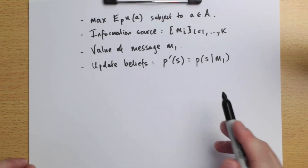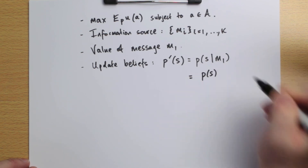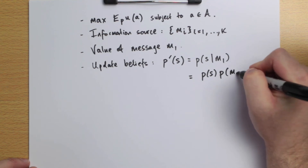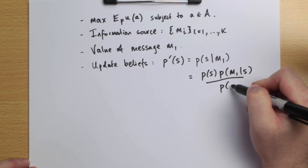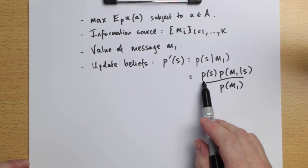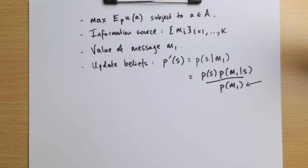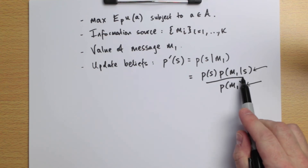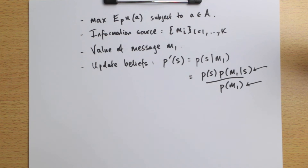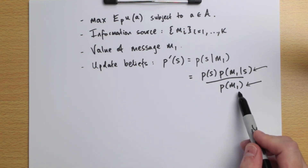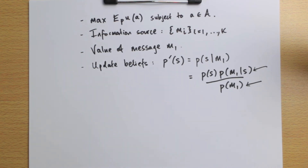We calculate this using Bayes' rule: p'(s) = P(s) × P(m1|s) / P(m1). Here, P(m1) — the probability of receiving message 1 — is called the unconditional message probability. And P(m1|s) — the probability of receiving message 1 conditional on state s — is called the precision of the message. We assume the decision-maker, when they receive the message, knows enough to form this updated posterior — specifically the unconditional message probability and the precision of the message.